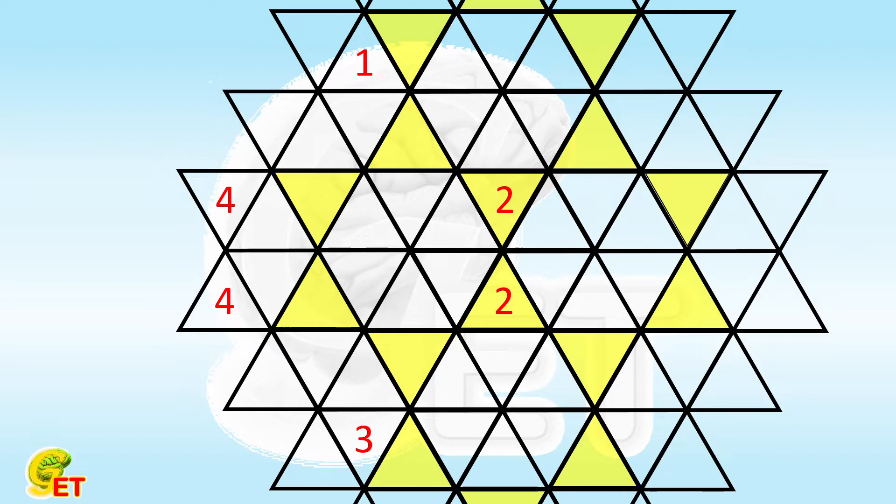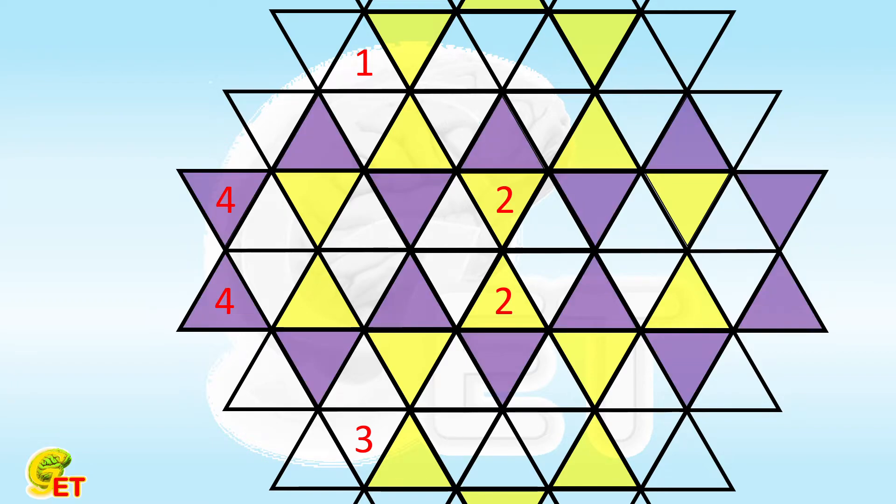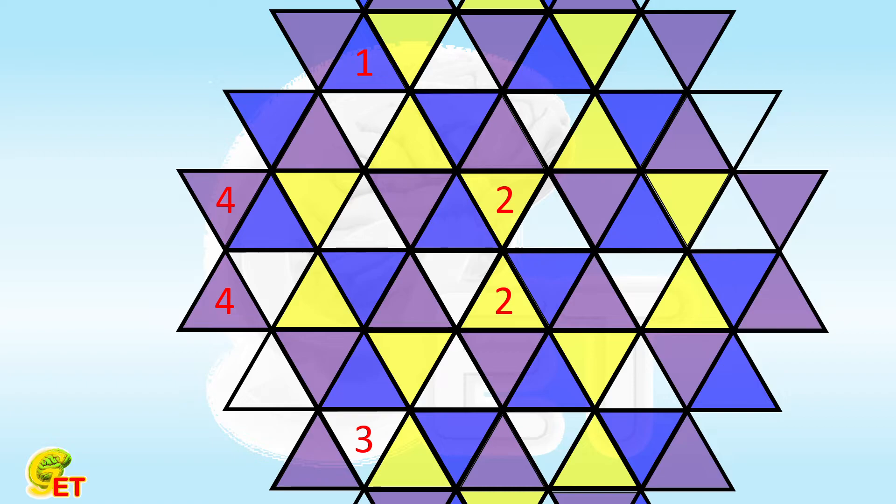Next, we will find out the small triangles that other numbers should occupy according to the principle. First for the number 4. Then for the number 1. At last for the number 3. So as a conclusion,